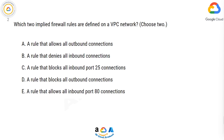A. A rule that allows all outbound connections. B. A rule that denies all inbound connections. C. A rule that blocks all inbound port 25 connections. D. A rule that blocks all outbound connections. E. A rule that allows all inbound port 80 connections.